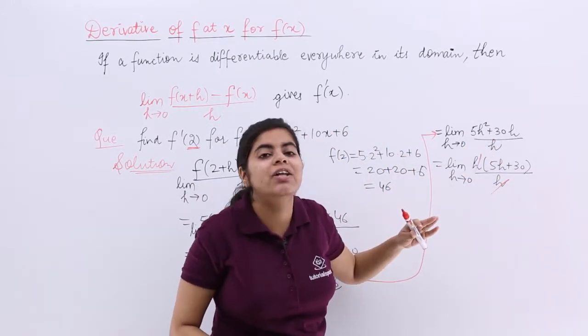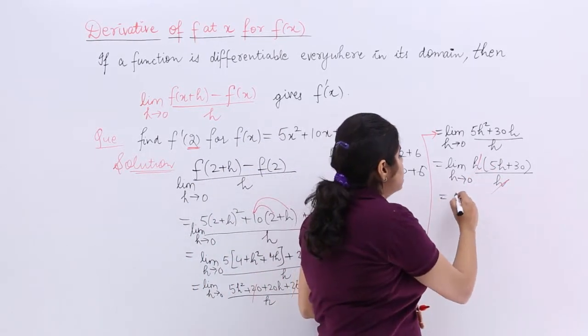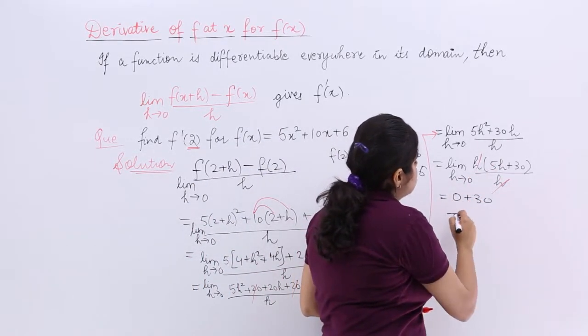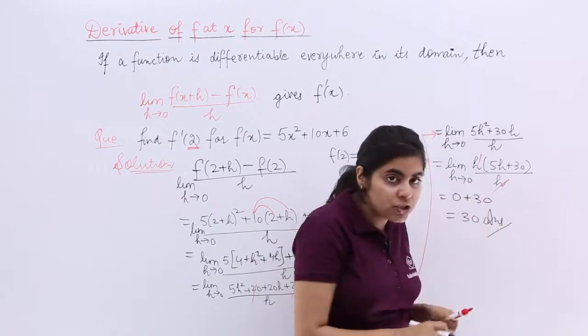Now it is h tends to 0. h tends to 0 means directly you can put 0 now. So it is 5 times 0 is 0 plus 30. So the answer is 30. So the answer to this question is 30.